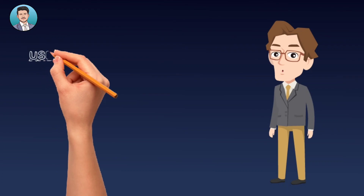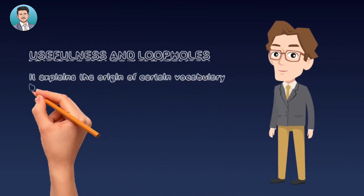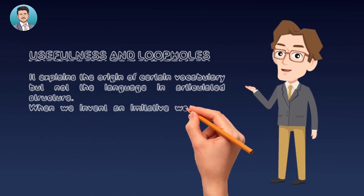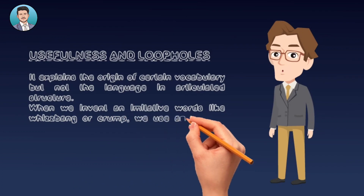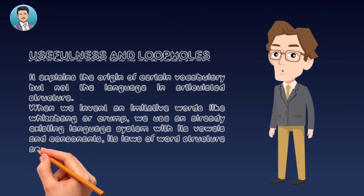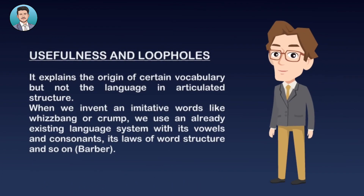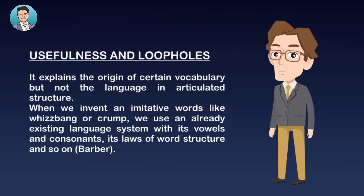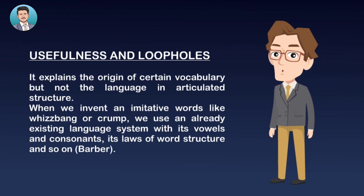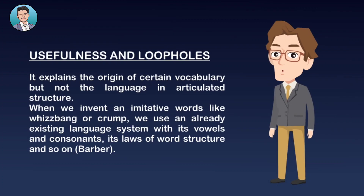Now let us see the usefulness and the loopholes of this theory. The Bow-wow theory explains the origins of certain vocabulary, but not the full language and its articulated structure. As Charles Barber noted, when we invent an imitative word like whispering or crying, we use an already existing language system with its vowels and consonants to build the word structure.